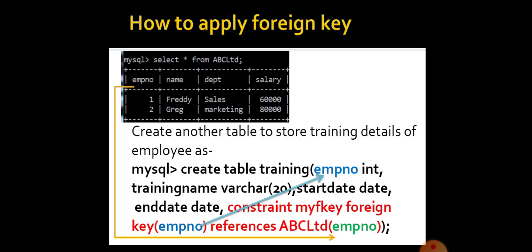Here the blue color EMPNO, employee number, indicates the foreign key. Whereas EMPNO in the green color indicates the primary key of table ABC Limited. How they are giving the foreign key? By using a statement: constraint my F key, that is my foreign key, foreign key EMPNO.